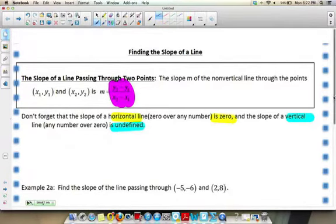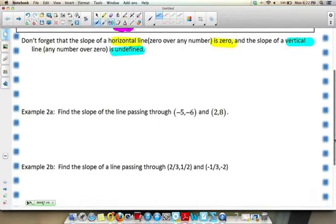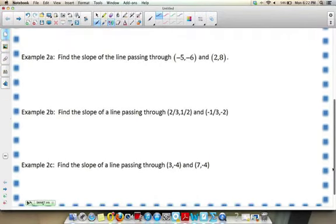So we're going to use the calculation a couple of times and calculate slope on examples 2a, b, and c. So we know that m is equal to, we're going to label this x1, y1, x2, y2. So this is going to be 8 minus minus 6, which will become 8 plus 6, over 2 minus minus 5, which will be 2 plus 5, which is going to be 14 over 7, which reduces to 2.